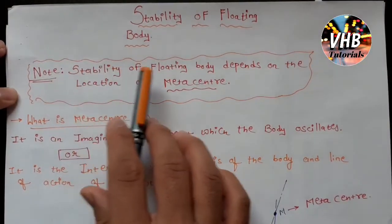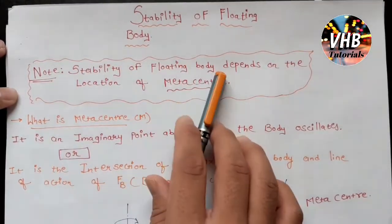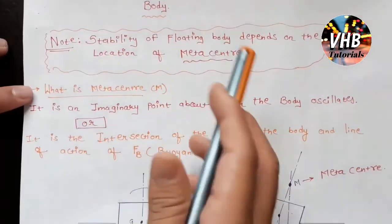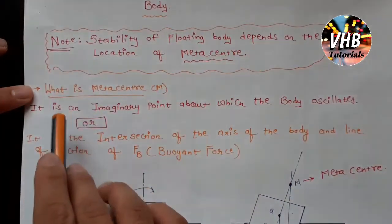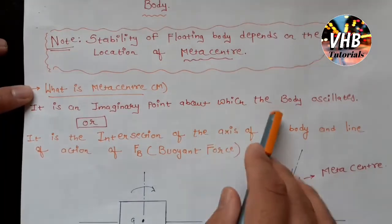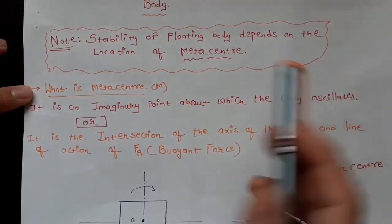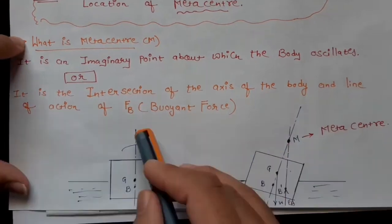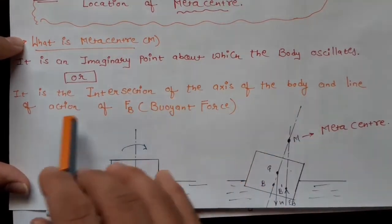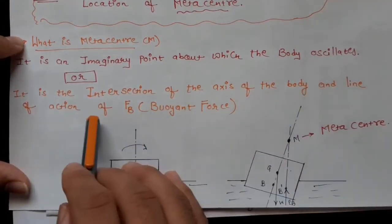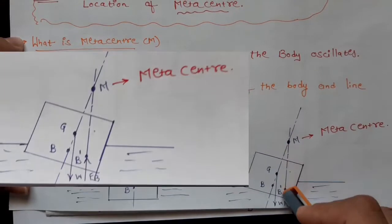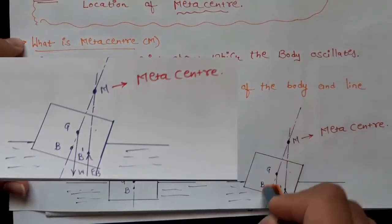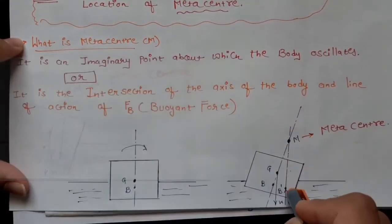Note that stability of the floating body depends on the location of metacenter, that is M. Now, what is metacenter? It is an imaginary point about which the body oscillates, or it is the intersection of the axis of the body and the line of action of buoyant force.